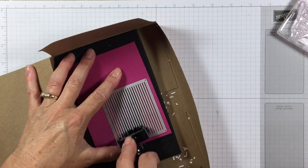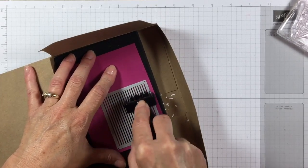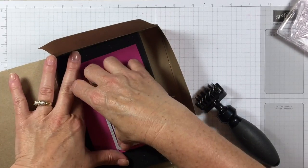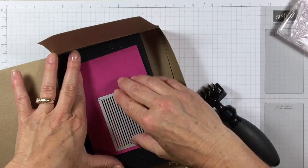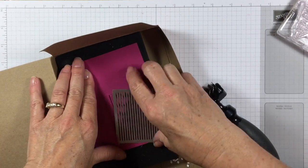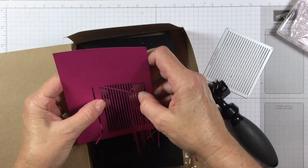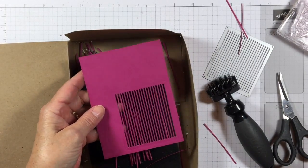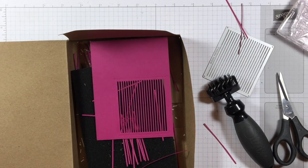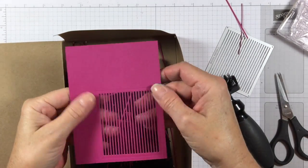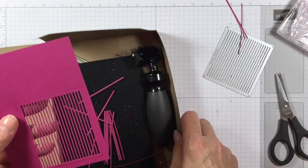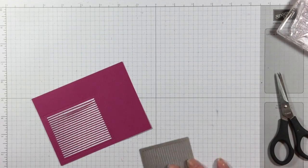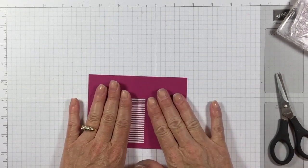Okay, now we have this all die cut. I am going to bring in my big shot die brush and get all these little pieces out. There we go.